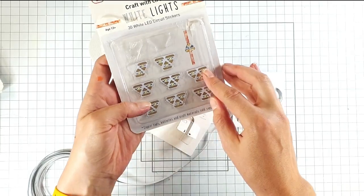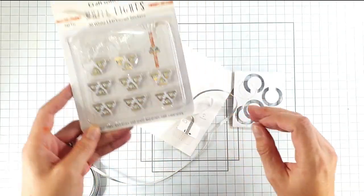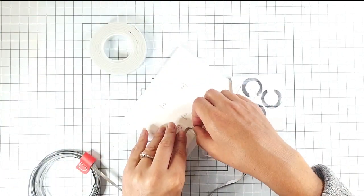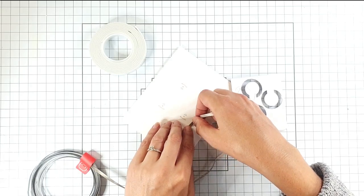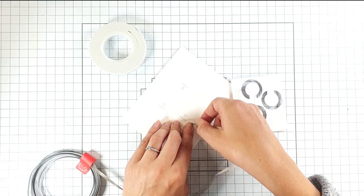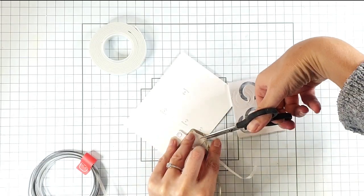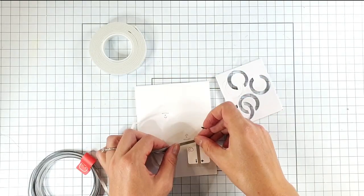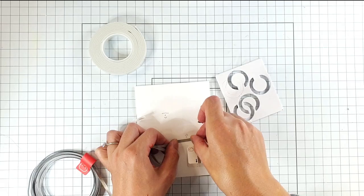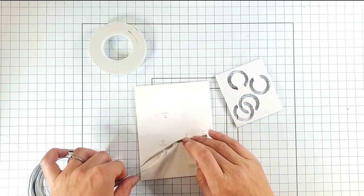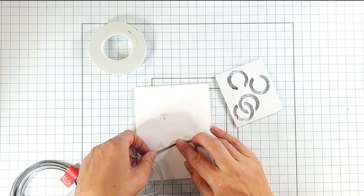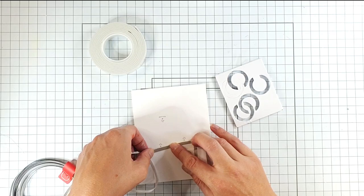And then if you remember, the positive side of our lights is the flat bit. So now what I'm going to do is just join up all of the flat bits of our lights. So I'm going to go this way first. So I'm going to chop that bit off, and then I can join this piece onto this one and it will carry on that circuit. So then I can just carry it on over here.